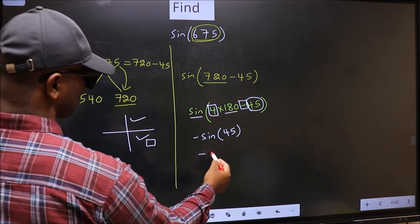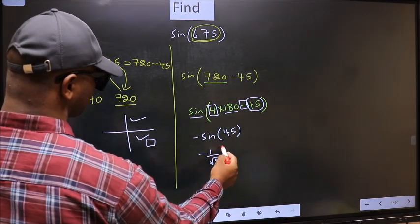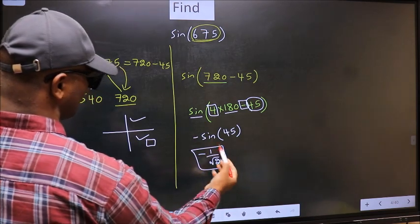So negative sin 45 is 1 by root 2. This is our answer.